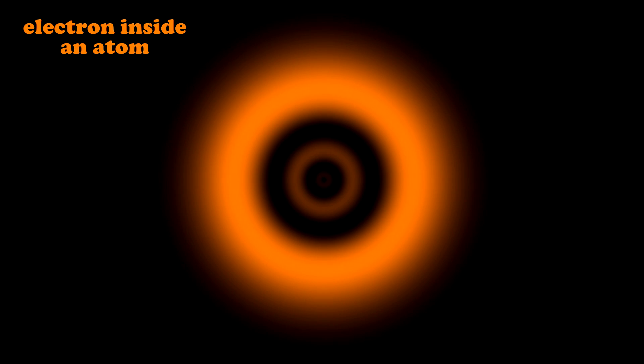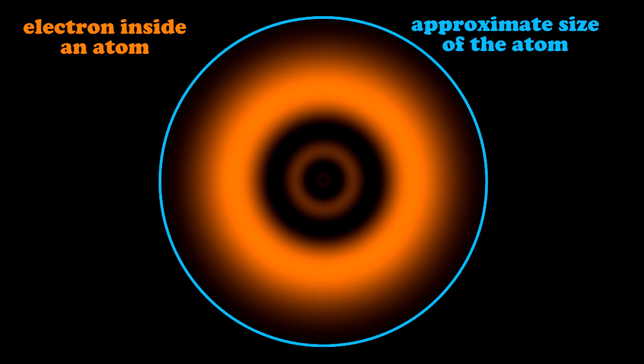A typical electron inside of an atom has a wave function that looks like this, which is the size of the entire atom. It's not that we don't know the position — it's that it doesn't have a position.